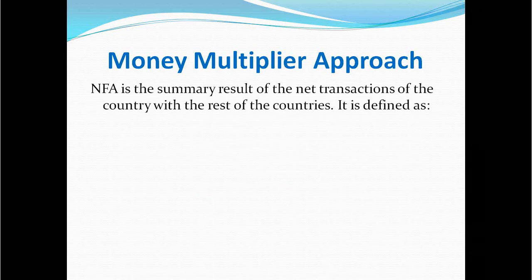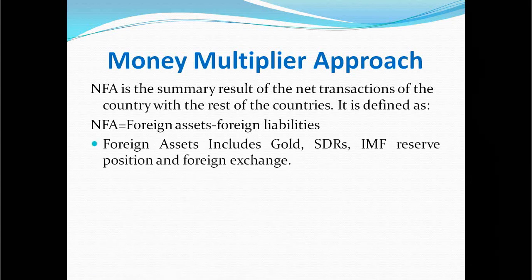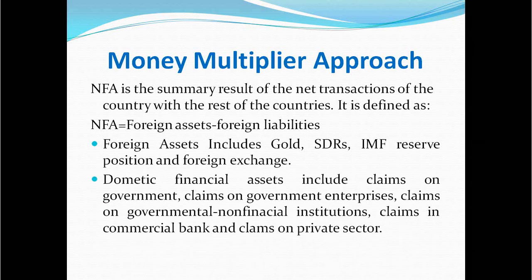NFA is the summary result of net transactions of the country with the rest of the world, defined as foreign assets minus foreign liabilities. Foreign assets include gold, special drawing rights, IMF reserve position, and foreign exchange holdings. Domestic financial assets include claims of the monetary authority on government, government enterprises, non-financial public institutions, commercial banks, and the private sector — essentially all credits extended by the central bank.